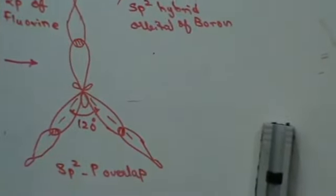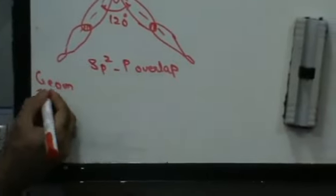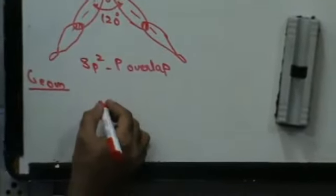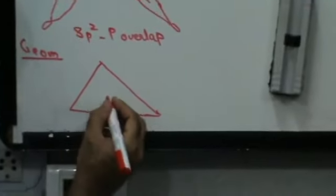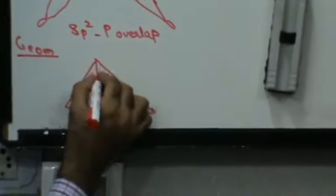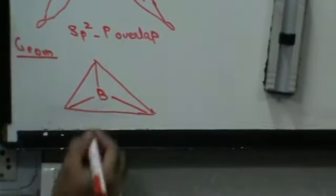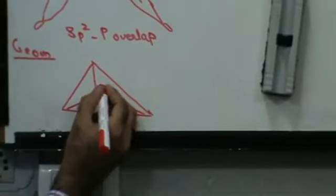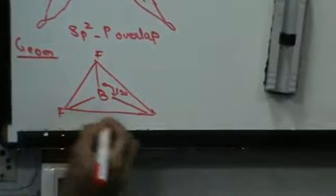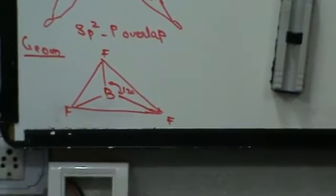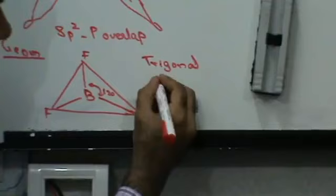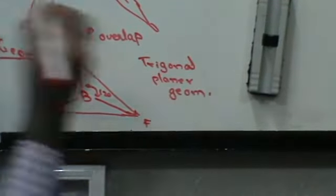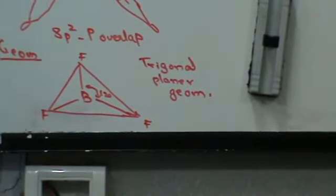The geometry of this: all of them are at 120 degrees, so this is going to be triangular geometry where all of them are at 120 degrees. Boron is in the center, and Fluorine connects at the three corners with a bond angle of 120 degrees. This is called trigonal planar geometry. That is the formation of Boron Trifluoride.